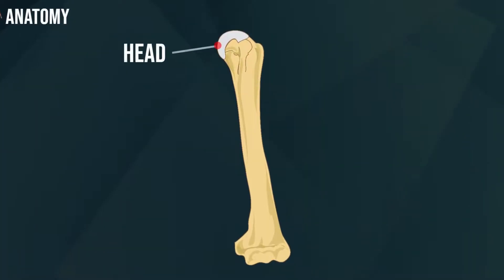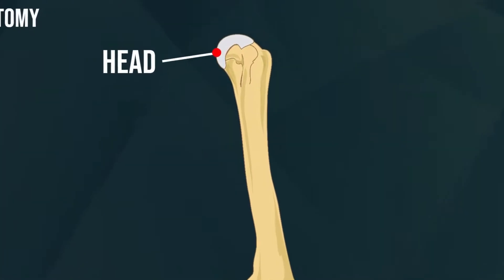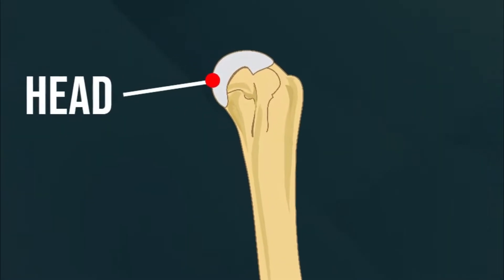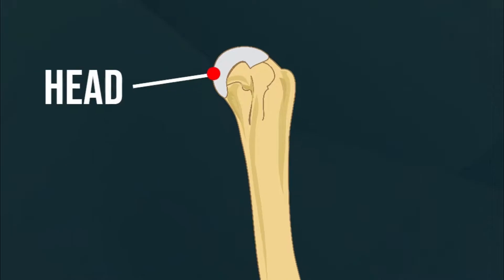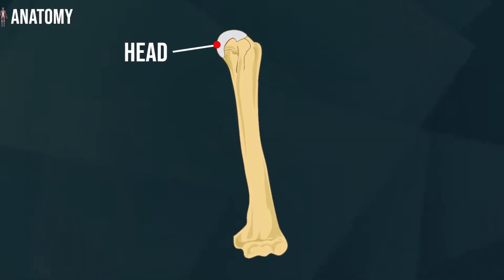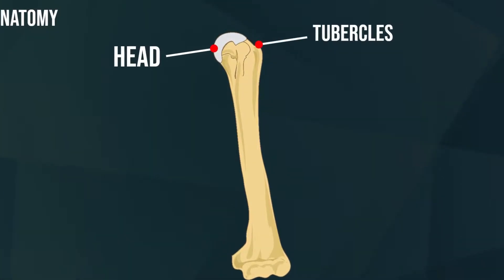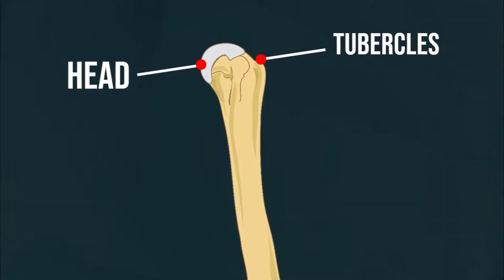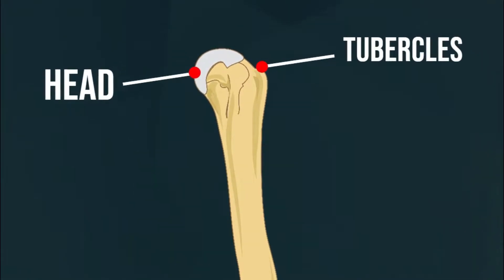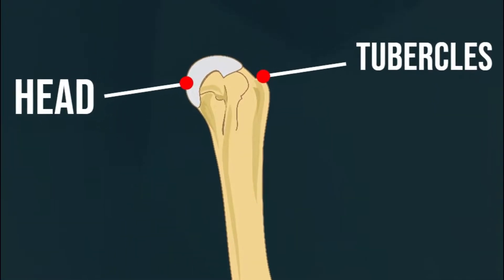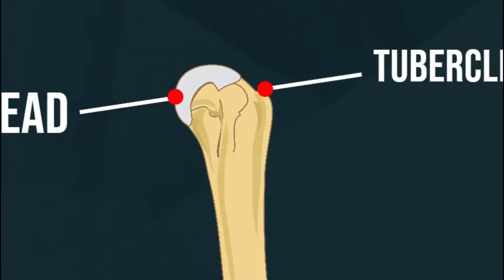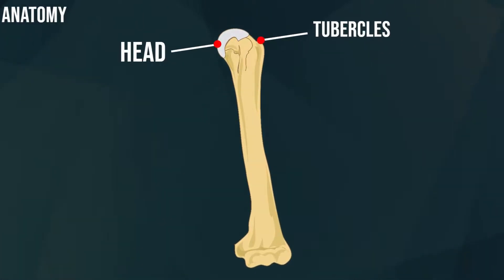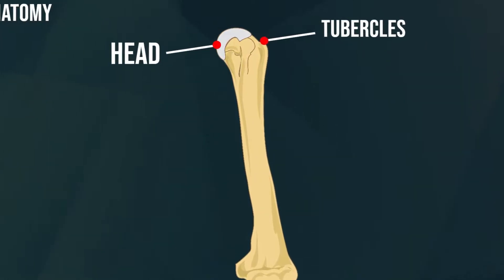Head: This rounded area interacts with the scapula to form the shoulder joint. Tubercles: These bony areas act as attachment points for the muscles of the shoulder joint. The body has two tubercles: the major and minor tubercles.